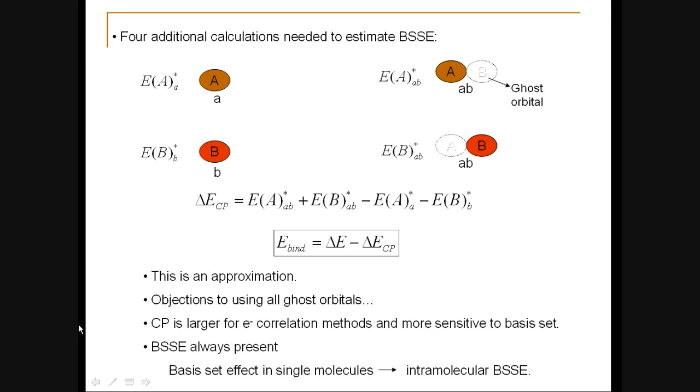Another thing that we note is that counterpoise correction is larger for electron correlation methods and is more sensitive to basis set. And I'm going to illustrate this in an example.